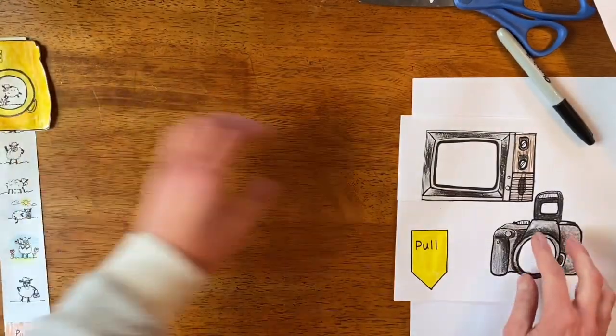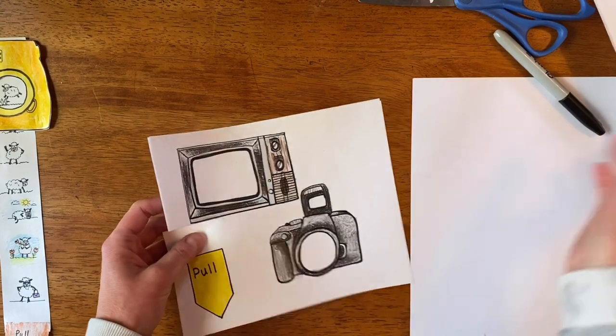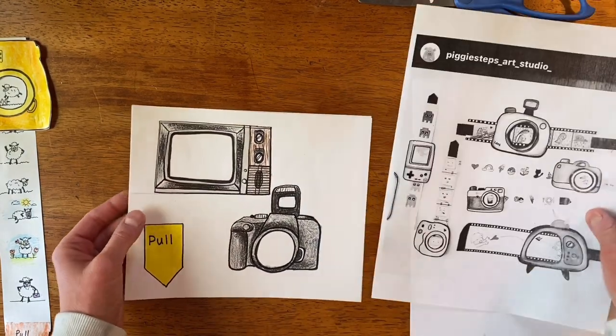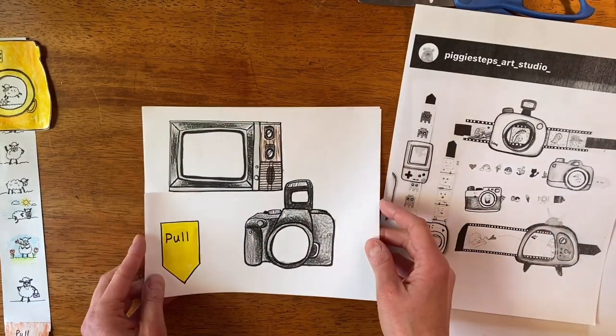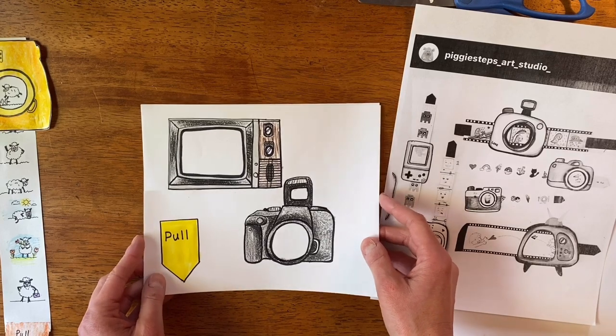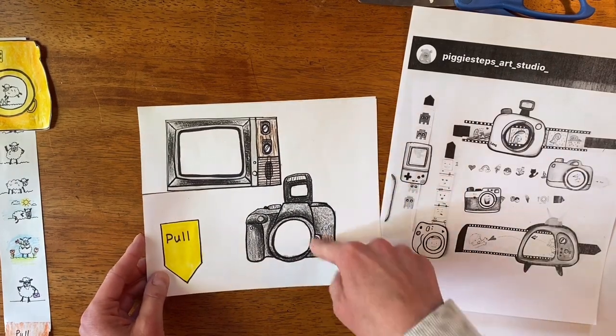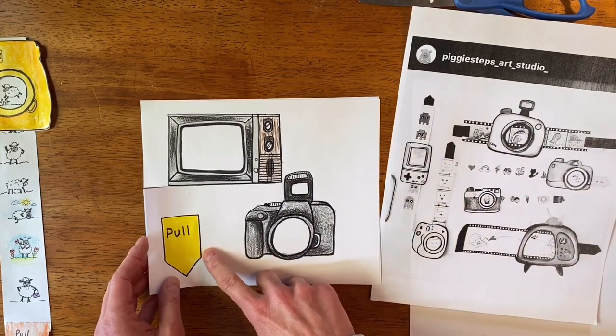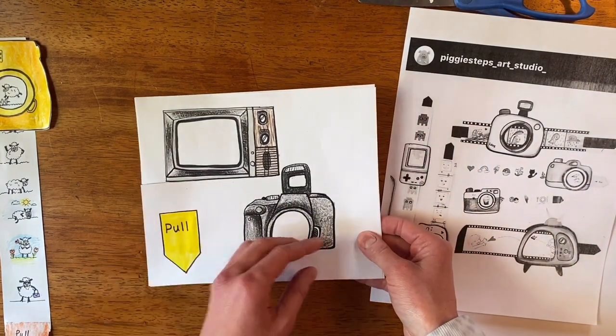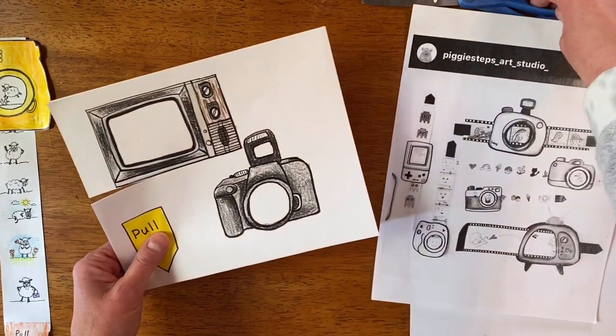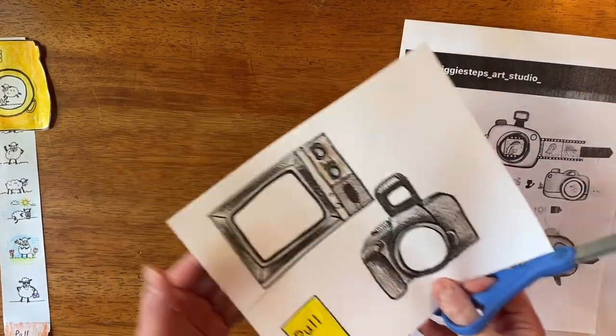So to start we're going to draw, and you can draw whatever kind of camera or video game. If you want to draw a Switch or any sort of game that you play, you can do that as well. So I drew two things, you can just draw one. I drew my pull tab and I colored them, so you can sharpie them, you can do whatever you want with it.